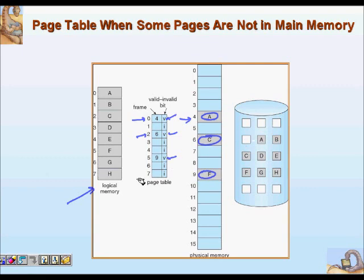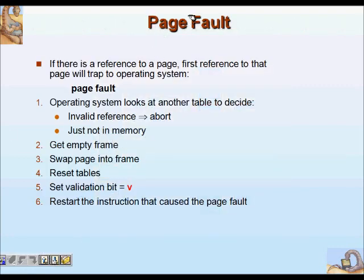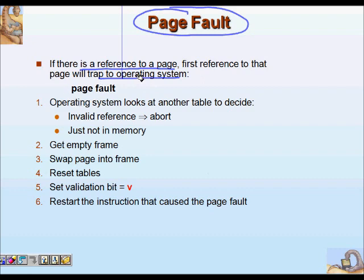The valid bits are set for those pages currently in memory; others are not in memory. If your program suddenly requires page 6, it is marked invalid — it is not in memory. A trap must be generated and the page must be brought from secondary memory into a free frame. This is called a page fault: when your program tries to access a page that is not in memory. The first reference to that page will trap to the operating system.